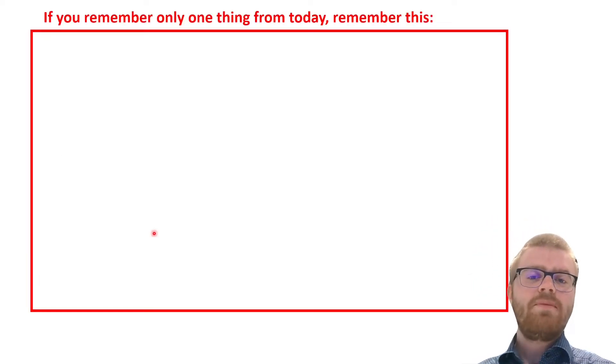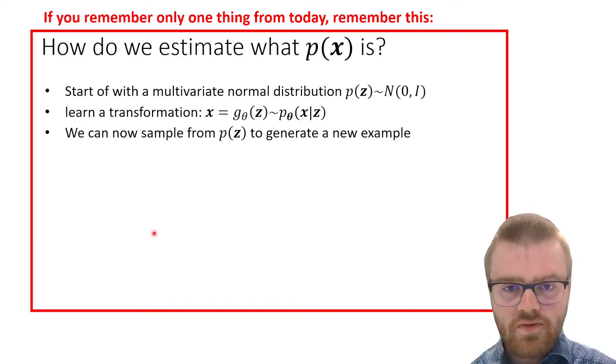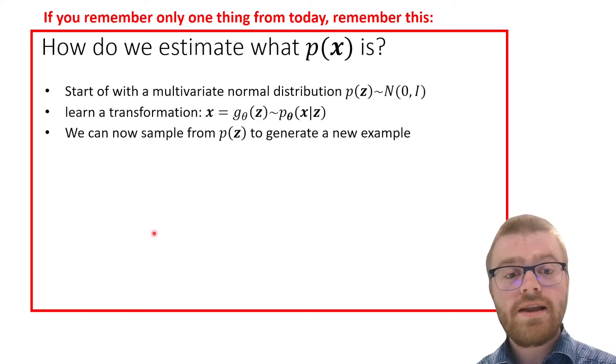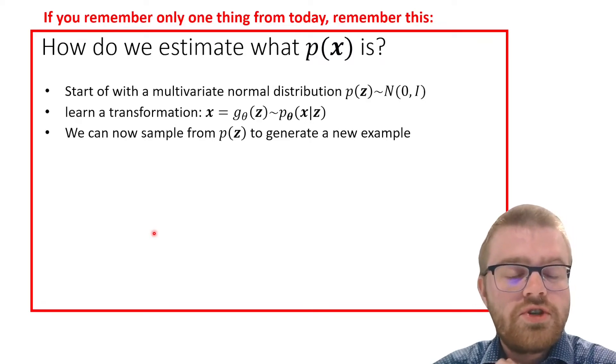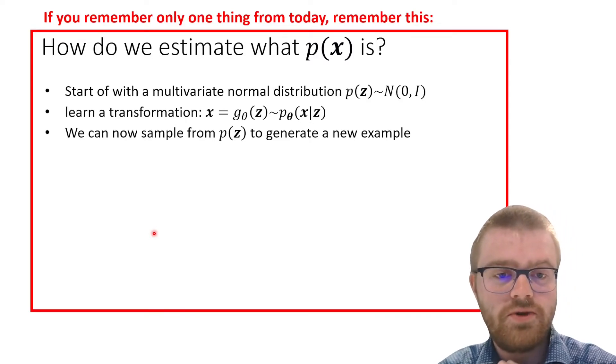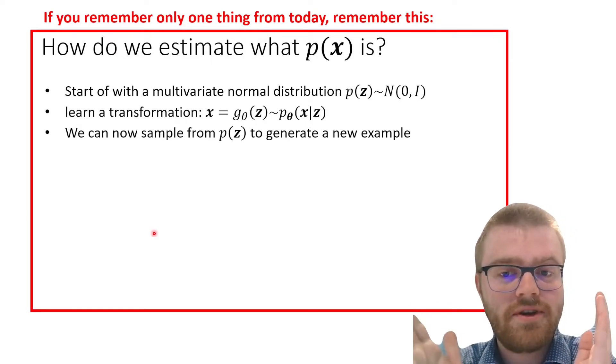Well, if you remember only one thing from today, remember this. We do not model p of x directly. Instead, we start with a latent variable z, and we can for example choose for this z a normal distribution with mean zero and unit variance.